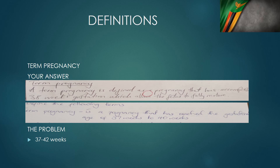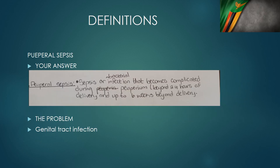The second candidate mentions 37 somewhere but their second number is wrong — that's 40. We know that term starts from 37 up to 42 weeks. This candidate, if they are lucky, maybe gets one or half because they haven't put in the actual numbers we want. The first candidate gets zero; the second candidate maybe gets one or half because they mentioned 37 weeks.